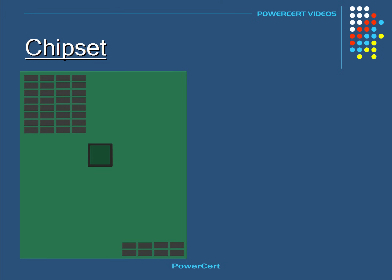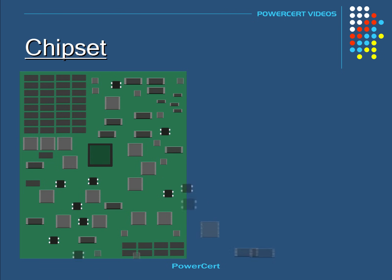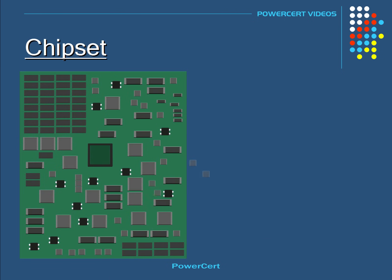One of the most important components you'll find on the motherboard is the chipset. Older motherboards were designed with a lot of different chips scattered all over the motherboard. There were chips for different things like chips for bus controllers, memory controllers, keyboard controllers, and so on.